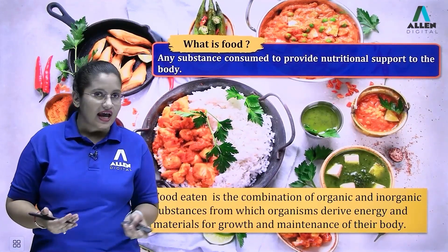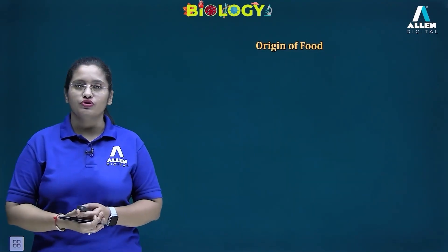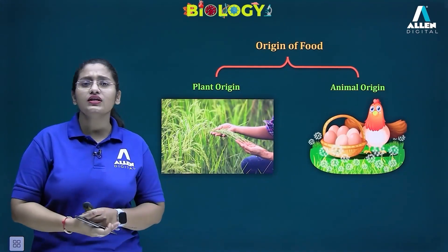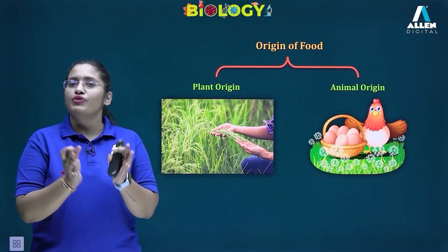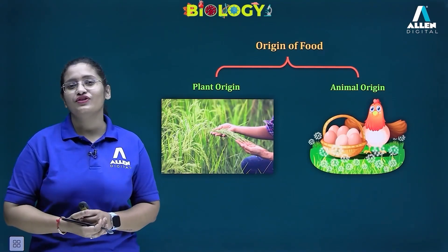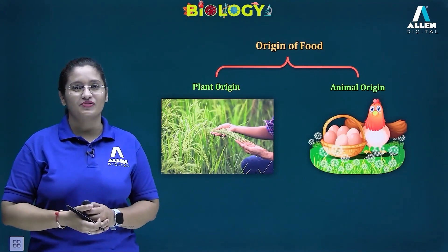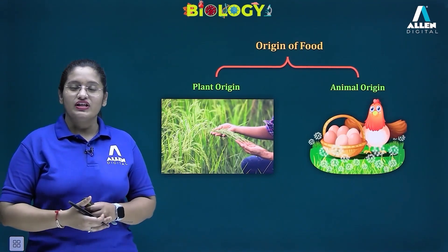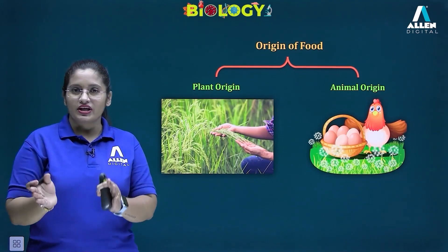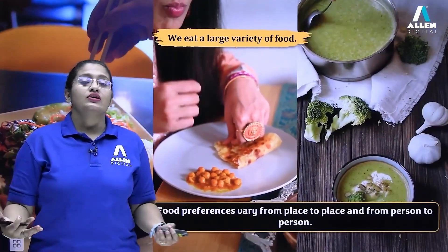Next, we talk about the origin of food. Food is obtained from two living sources — either a plant or an animal. When food is obtained from a plant source, we call it a plant product, and if obtained from an animal source, it is referred to as an animal product. We consume both. So the origin of food is either plant origin or animal origin.